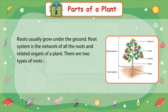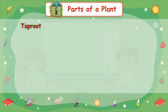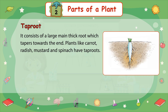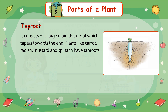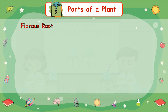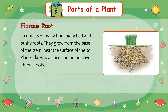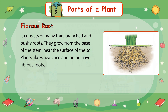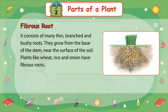There are two types of roots. The tap root consists of a large main thick root which tapers towards the end. Plants like carrot, radish, mustard, and spinach have tap roots. Fibrous roots consist of many thin, branched, and bushy roots. They grow from the base of the stem, near the surface of the soil. Plants like wheat, rice, and onion have fibrous roots.